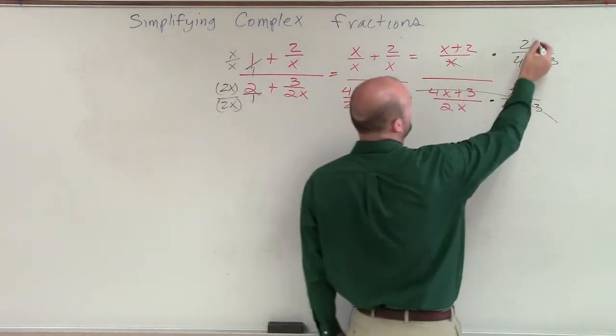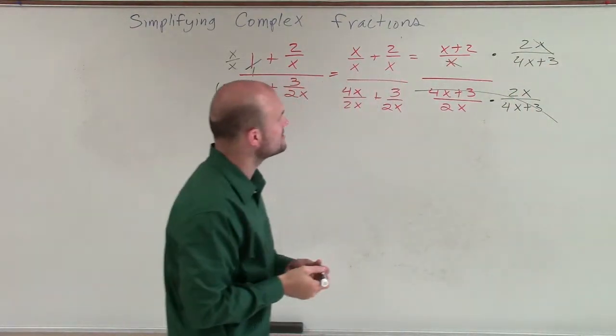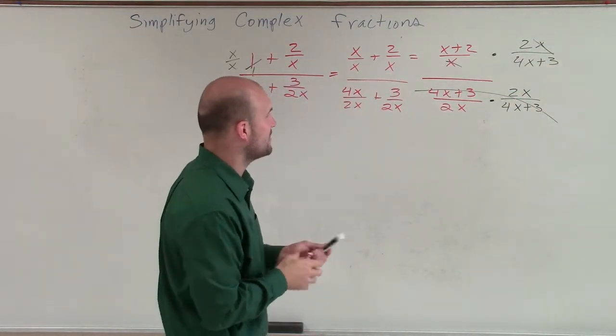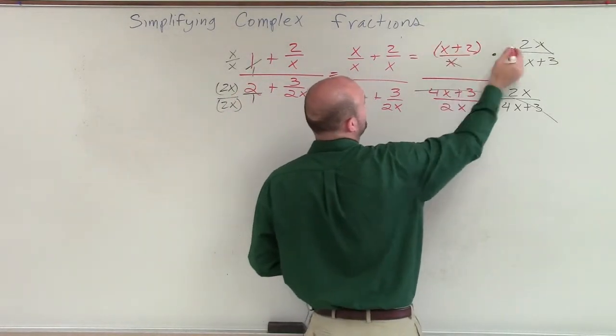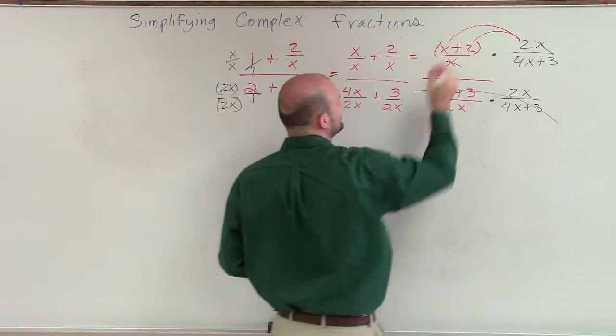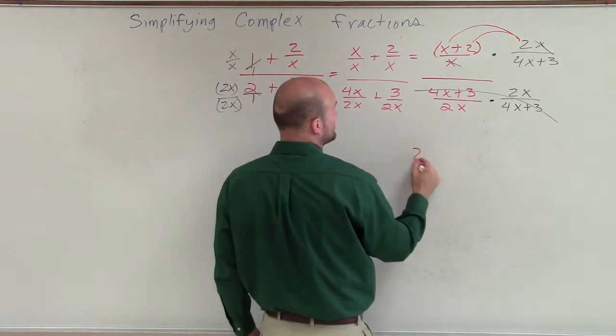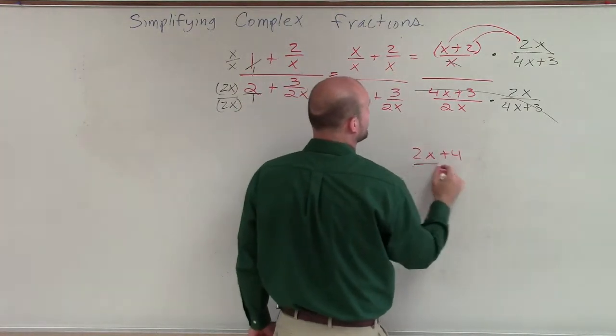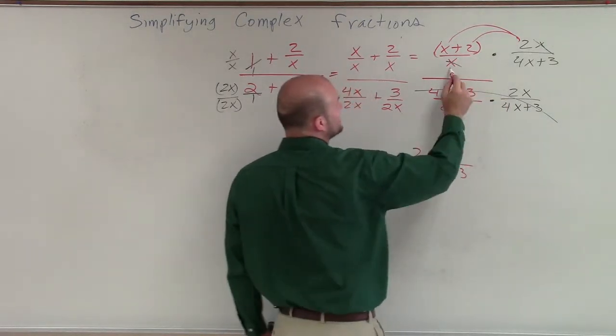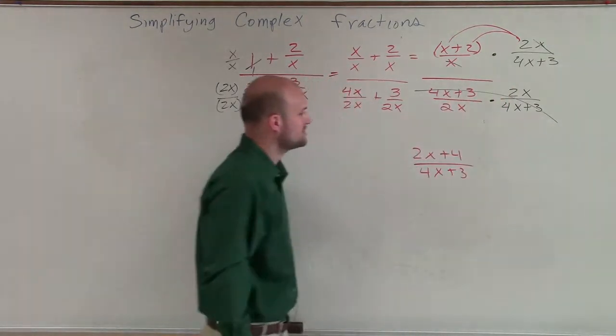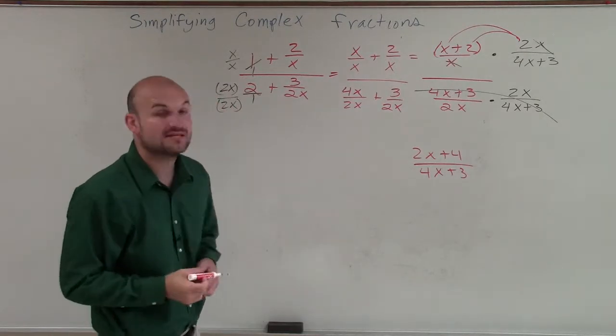And then over here, we could say that my x's are now going to divide out. And therefore, I'll be left with 2 in applying the distributive property times 2 and then 2 times x. So my final answer is going to be 2x plus 4 divided by 4x plus 3. And since that went to 1, I'm just going to add the 4x plus 3. And that will be my simplified answer.